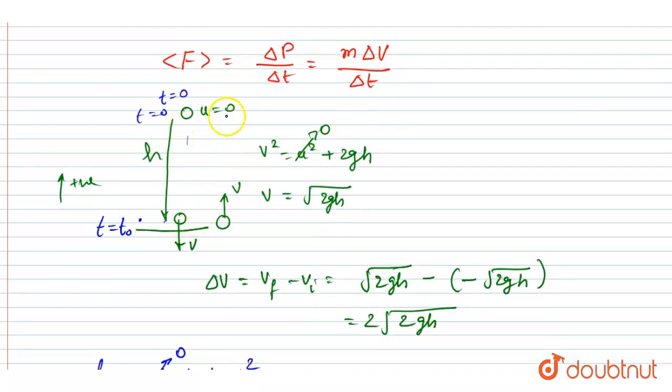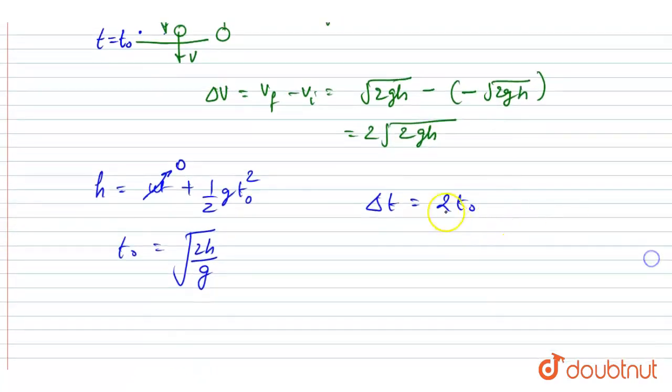If you see here, the ball started from here, it bounced back from the floor and it reached to the same height. And in this process it took 2t₀: t₀ to reach from here to ground and t₀ to reach from ground to here to the same height.